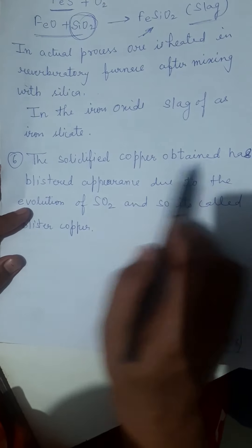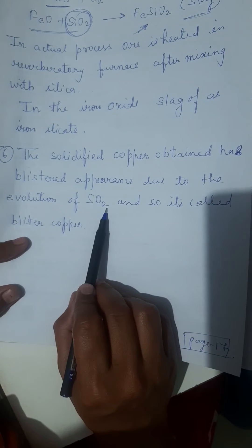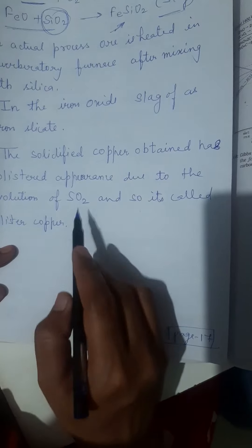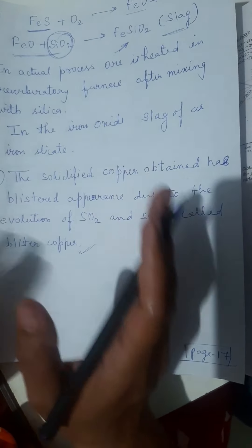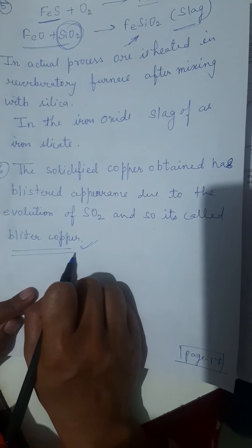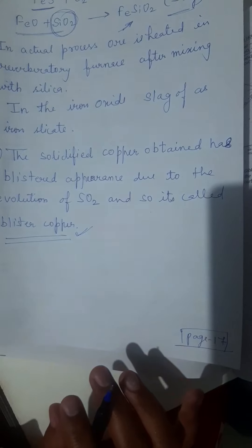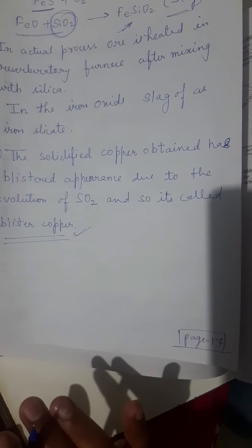Last point of this topic: the solidified copper obtained has blister appearance due to evolution of SO2, and so it's called blister copper. The copper we get from reverberatory process is blister copper. That's it. You can make your notes properly and do revision with NCERT only. Thank you.